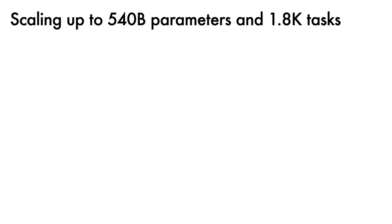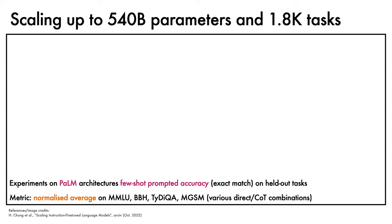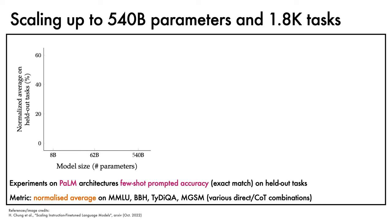The first set of experiments studies the effect of scaling the PaLM model across different sizes and different numbers of fine-tuning tasks by evaluating few-shot prompted accuracy on held-out tasks. The metric reported is a normalised average over the four benchmarks spanning many topics — MMLU, BBH, TidyQA, and MGSM — which are assessed in various direct prompting and chain-of-thought prompting combinations. On the x-axis, we plot model size in parameters, and on the y-axis, we report normalised average on held-out tasks. We can plot results for no fine-tuning, as well as fine-tuning on 9 tasks, 89 tasks, 282 tasks, or 1,836 tasks.